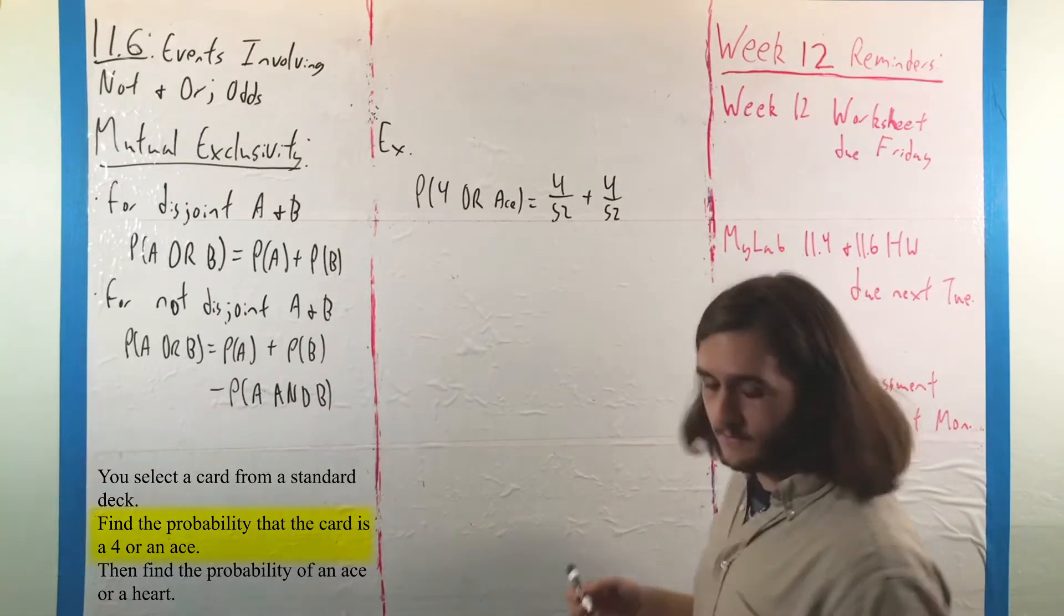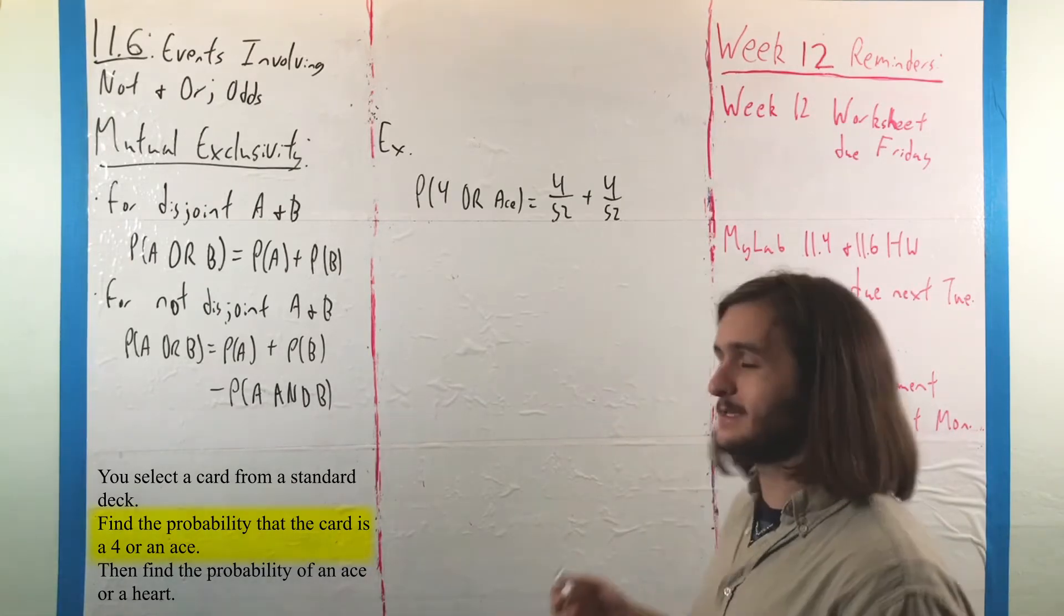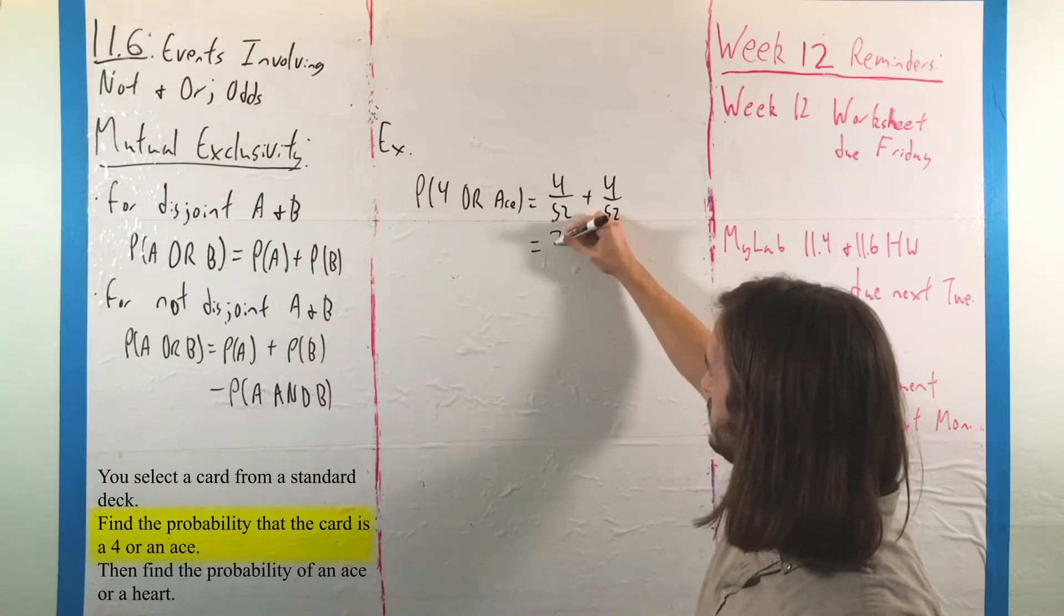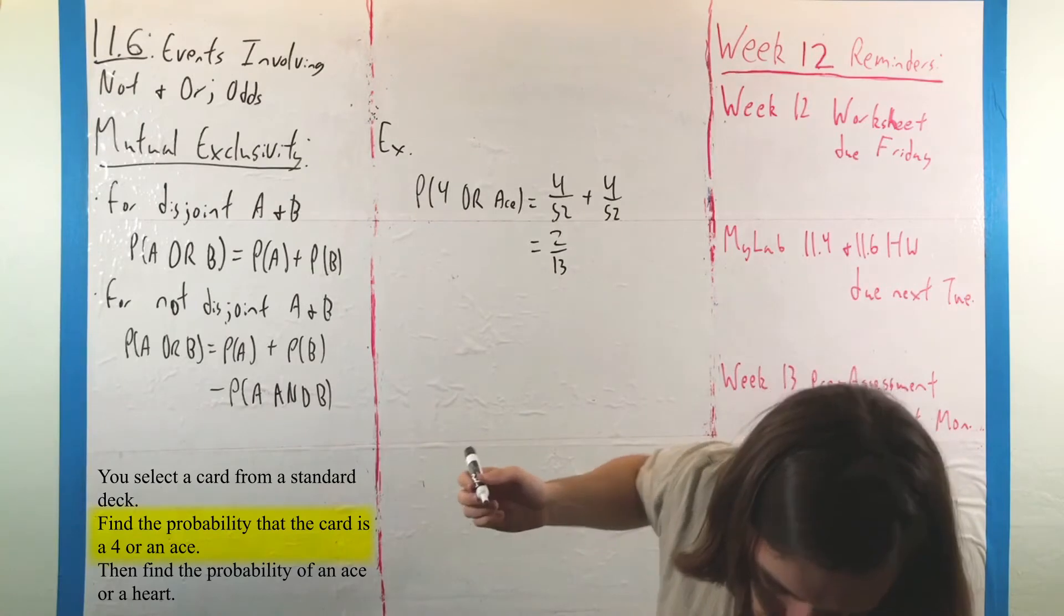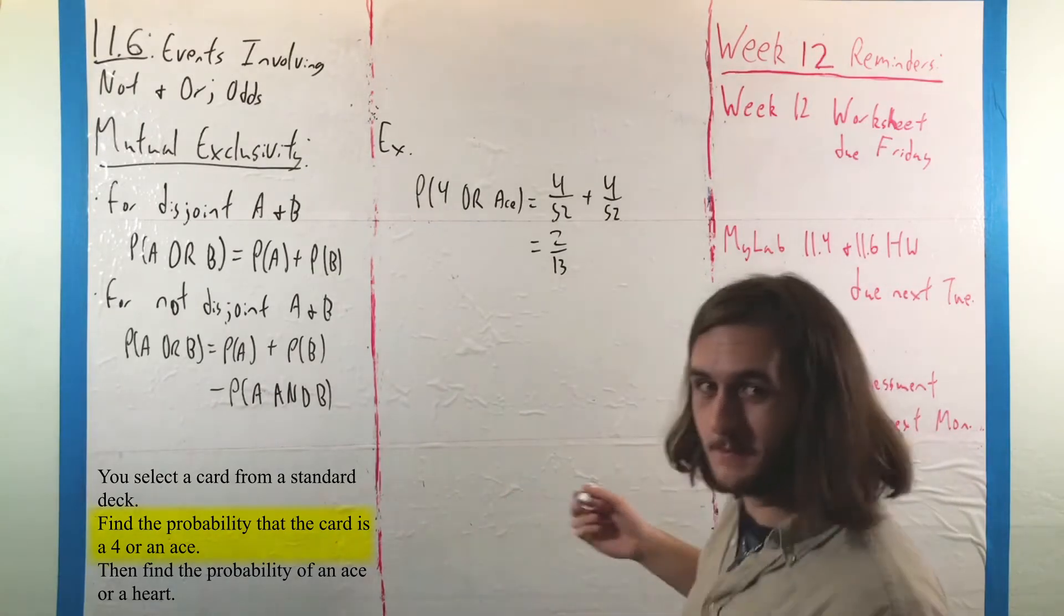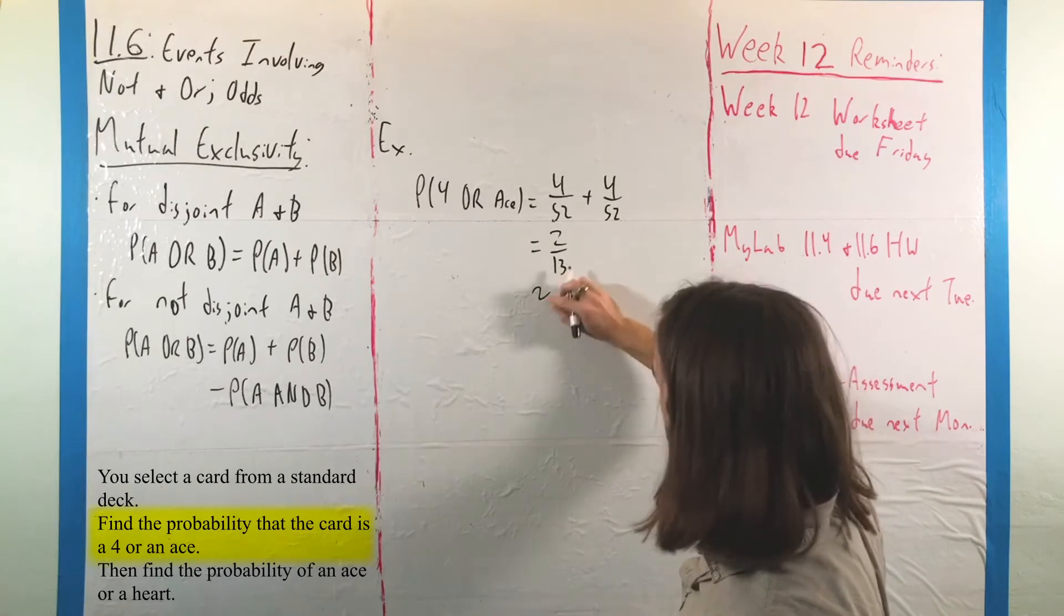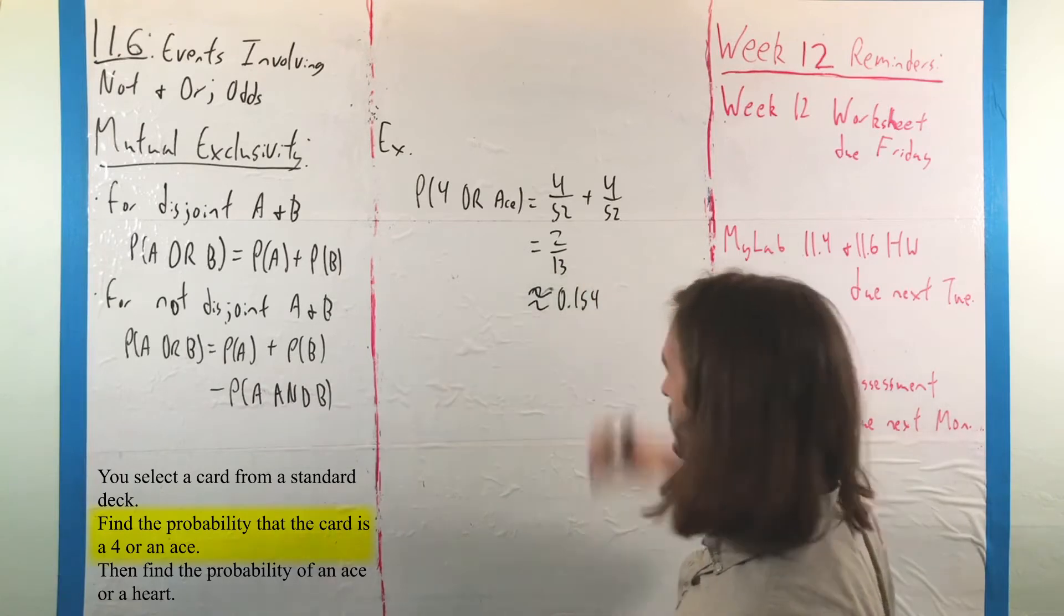Since we don't have any cards that are both 4s and aces at the same time, we get 8 out of 52, or 2 out of 13, which if we prefer, would have a probability represented as a decimal of about 0.154.